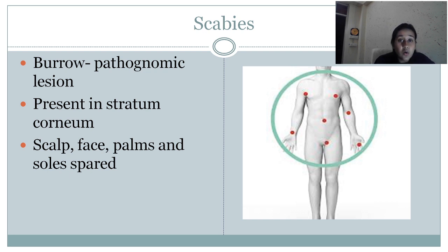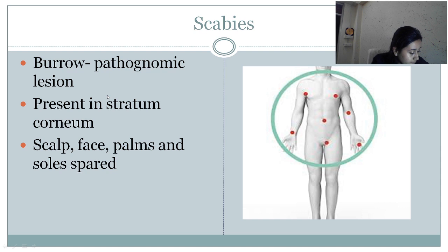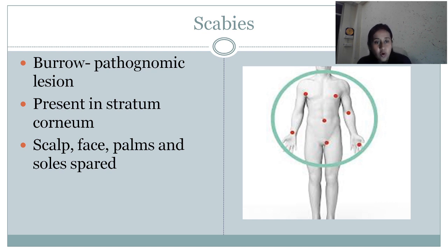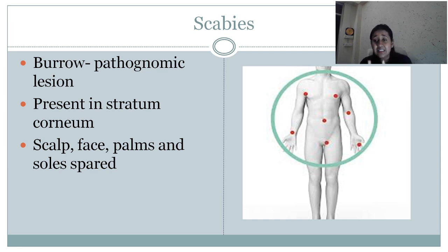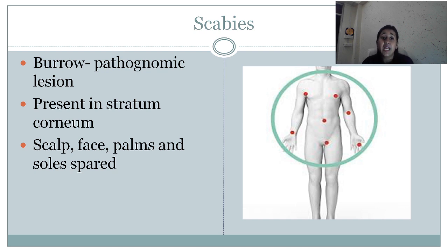Coming to parasitic infections — scabies. The pathognomonic lesion of scabies is the burrow. The classical lesion is presence of a burrow at the stratum corneum level. The scalp, face, palms, and soles are usually spared. Scabies is caused by Sarcoptes species. It is a disease of poor psychosocial conditions or where local hygiene is not good — called a 'water-wash disease.' Those people who do not wash their clothes or do not bathe daily, especially where there is overcrowding, can develop these burrow-like lesions.